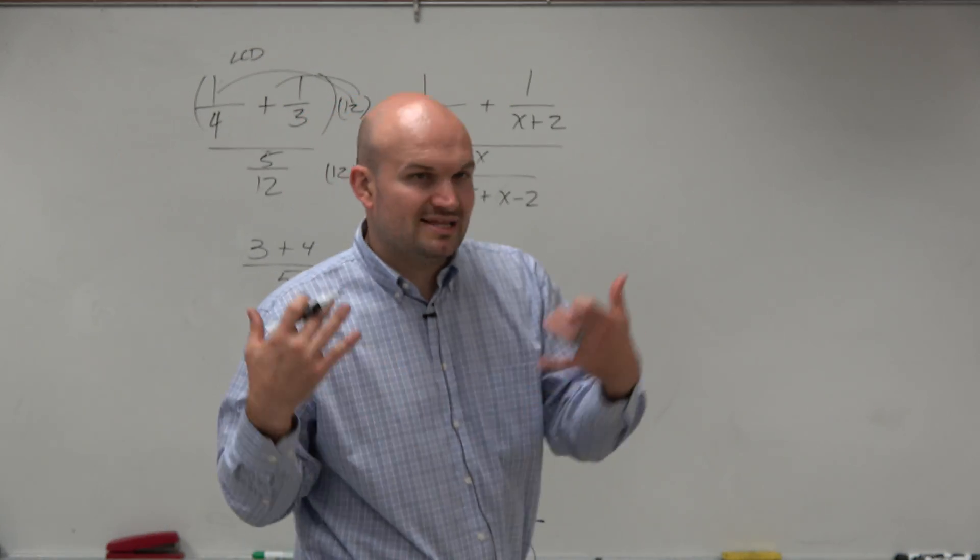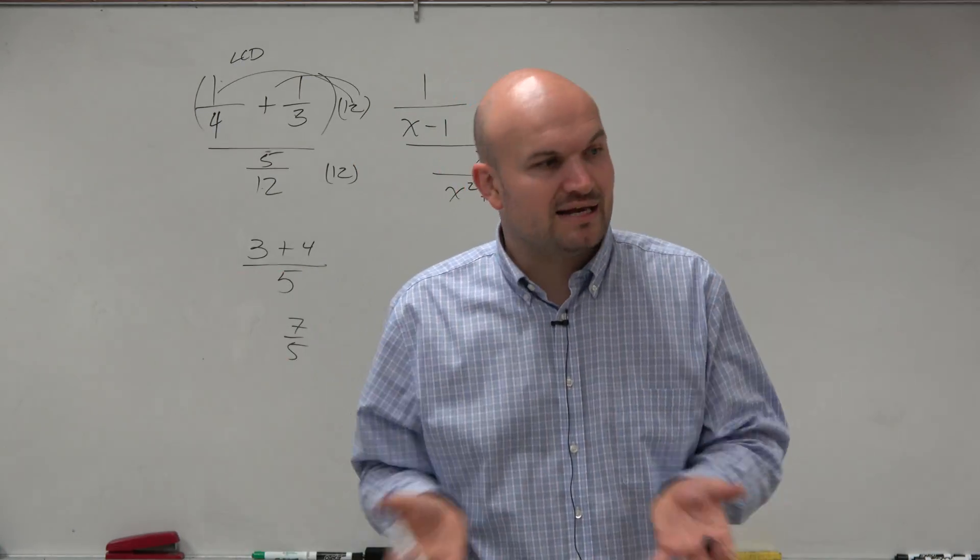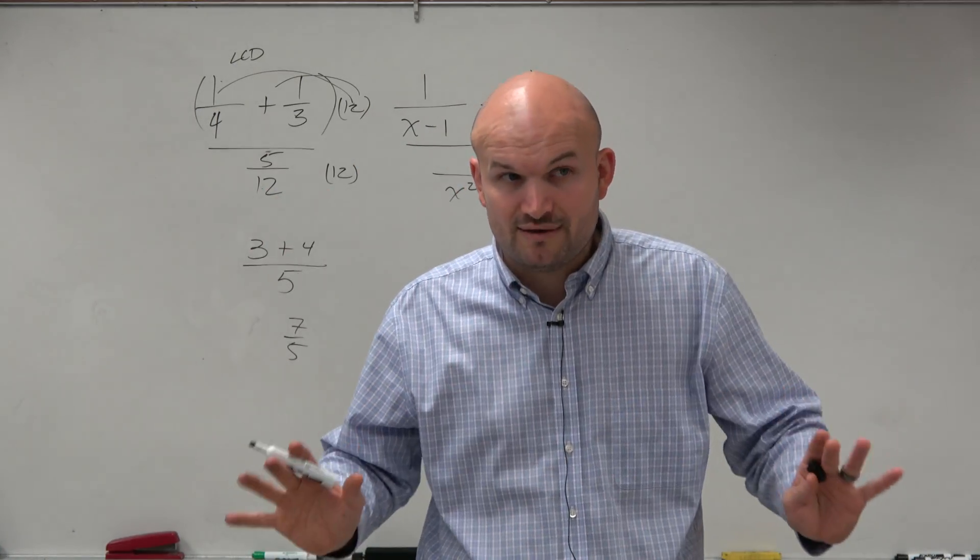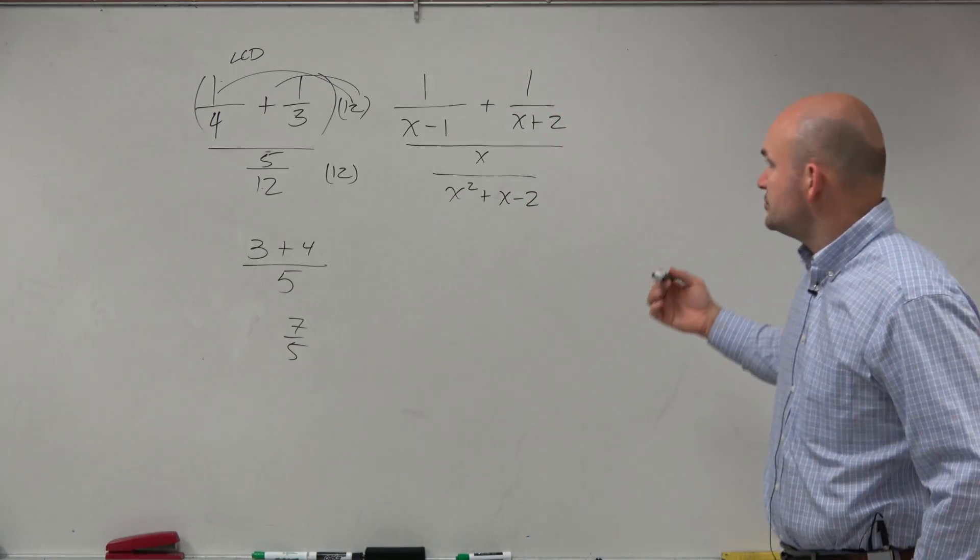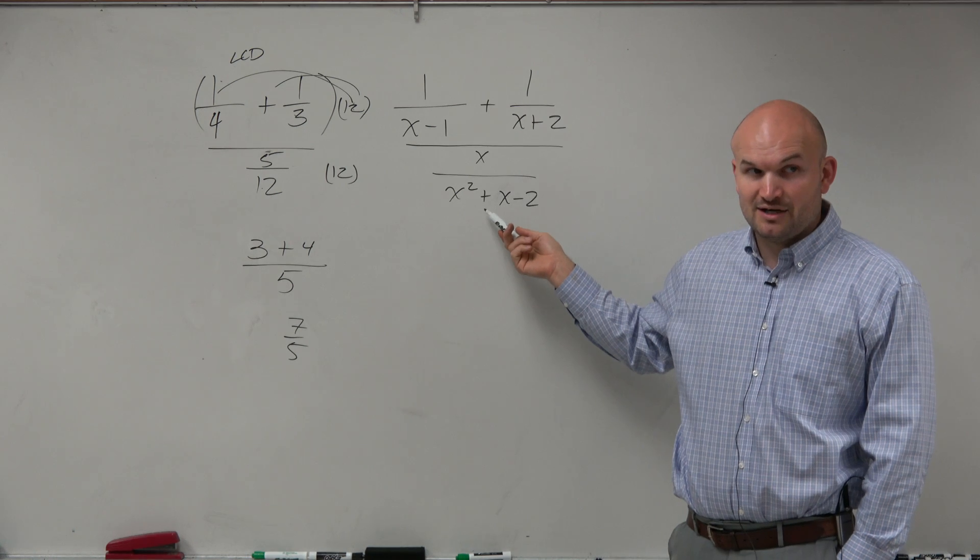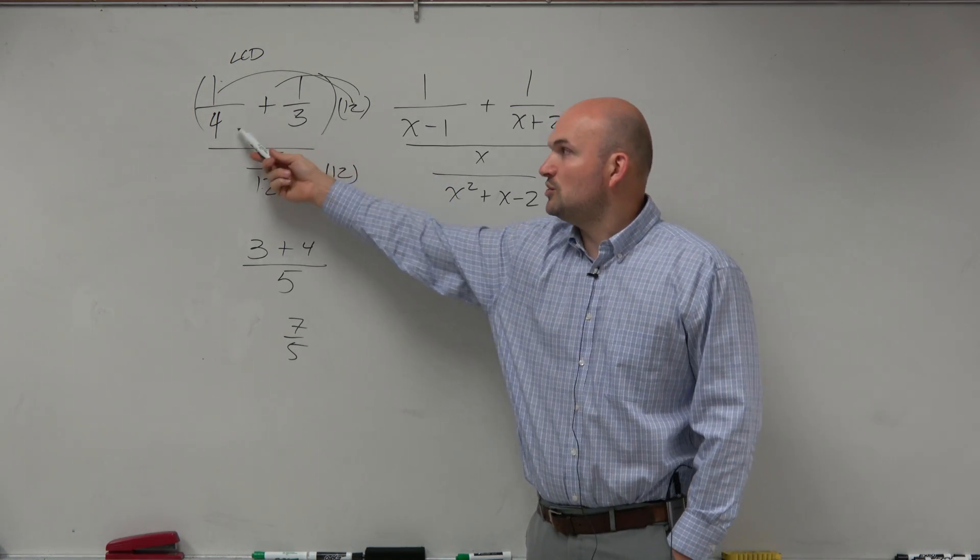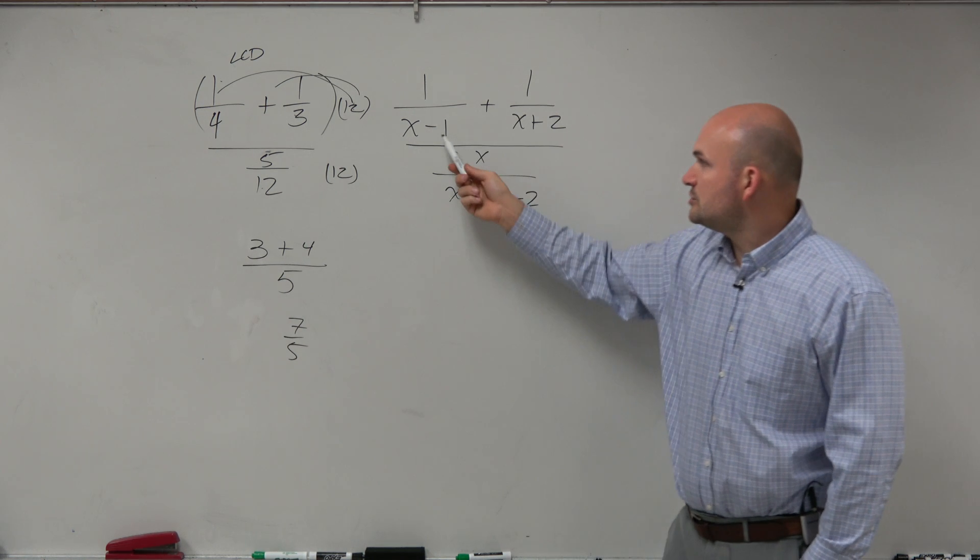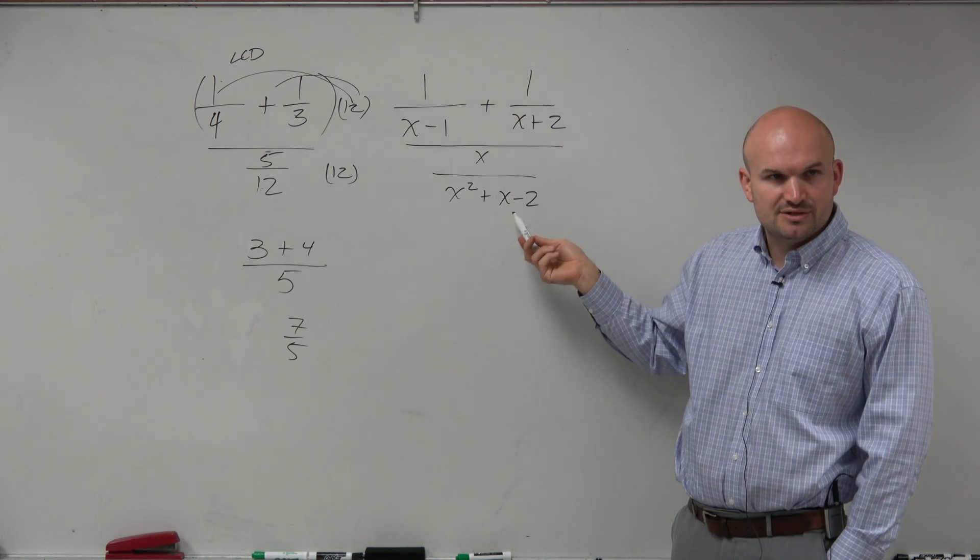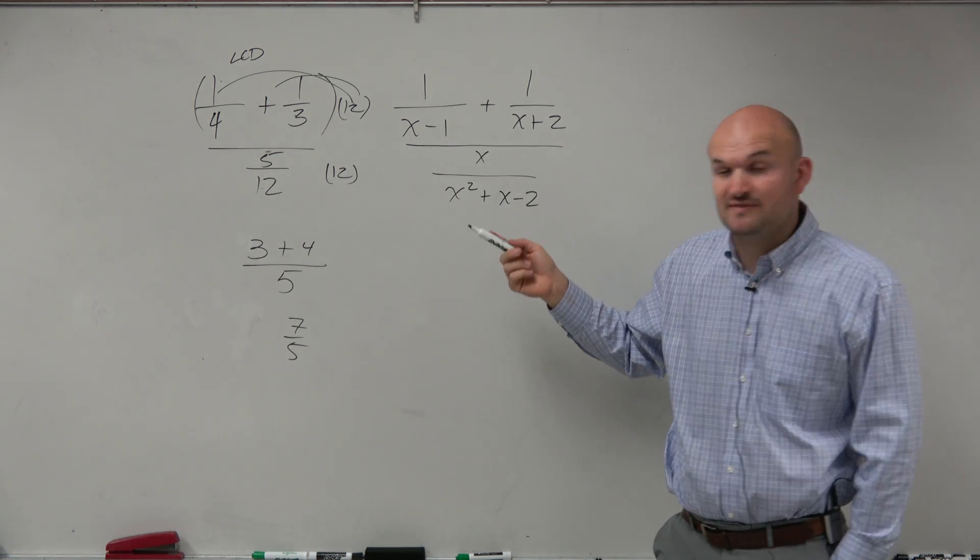So I'm going to want to apply the same operation here. Instead of combining my fractions, which is perfectly fine. You can go down that route. But what I like to do is just get rid of the fractions. So rather than multiplying all of these to get my LCD, I didn't multiply all of these, right? Because I noticed that 3 and 4 divided into 12. So do x minus 1 and x plus 2 divide into this? Well, let's factor it to see if that's the case.